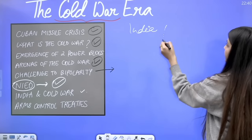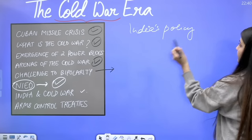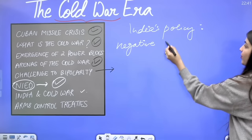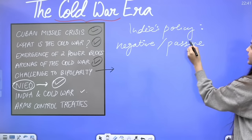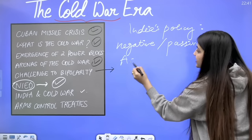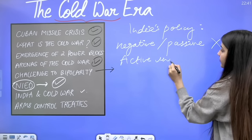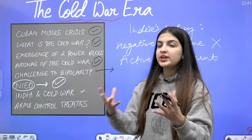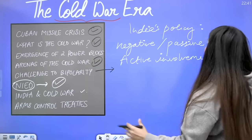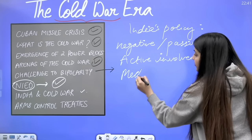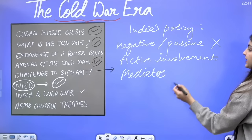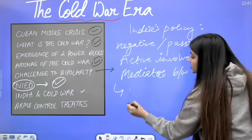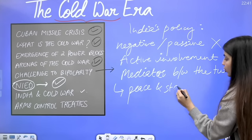India's foreign policy was neither negative — just saying what it won't do — nor passive. It was active involvement and active intervention in calming down the rivalries between the two nations, smoothening and soothing the Cold War tensions. India acted as a mediator between the two alliances, seeking peace and stability.